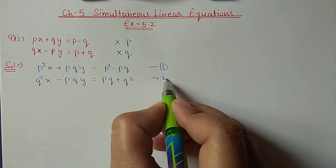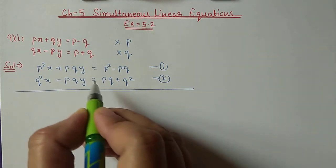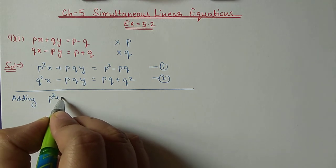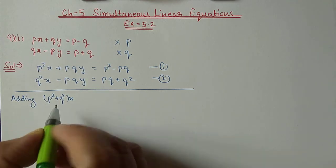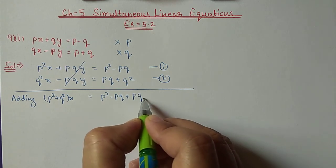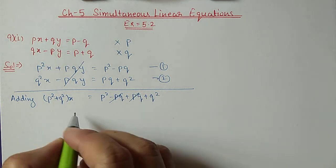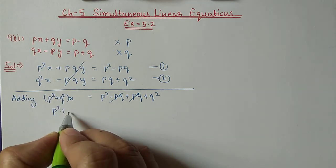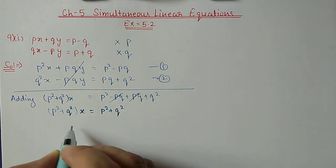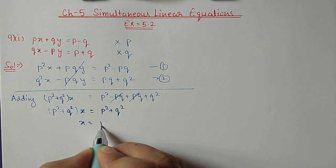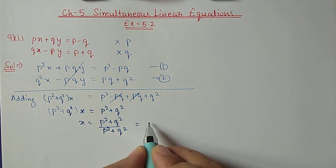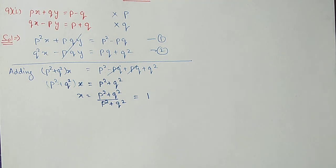This is the first equation and this is the second equation. Now the Y coefficient is the same in both equations. Adding equation 1 and 2, it will become P squared plus Q squared times X. The middle terms cancel out, and we have P squared plus Q squared times X equal to P squared plus Q squared. We can shift P squared plus Q squared to the other side for division,